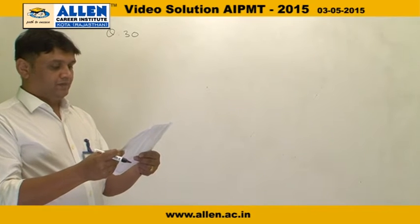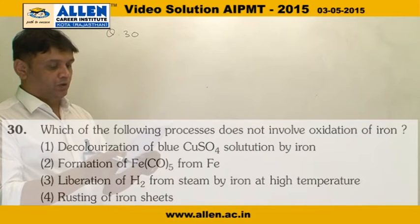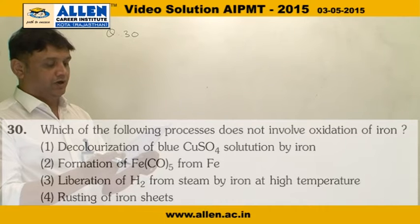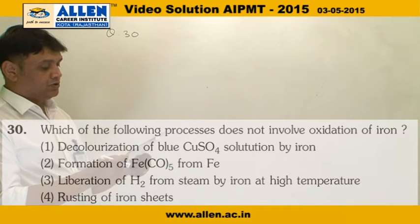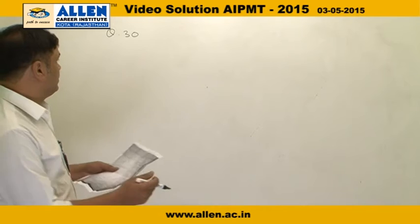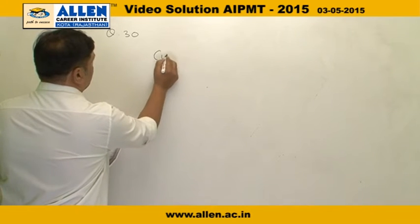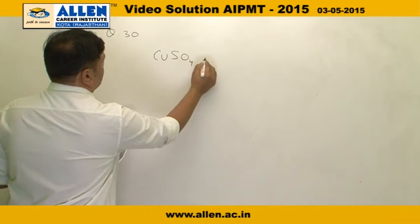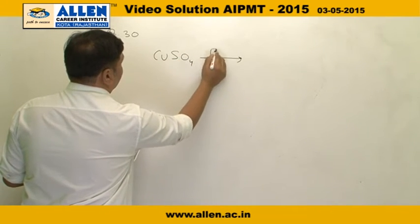Question number 30 asks which of the following processes does not involve oxidation of iron. The first option is decolorization of blue copper sulphate solution by iron. Copper sulphate when reacts with iron forms a redox reaction.